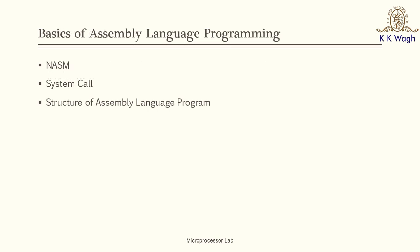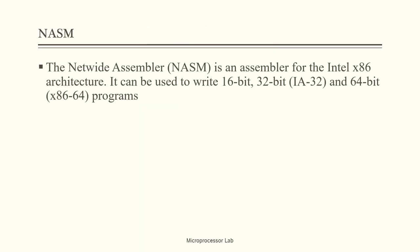Before starting with today's assignment, we will quickly revise the basics of assembly language programming. As we all know, we use the Netwide Assembler to run assembly language programs, and then we use system calls to write our programs. The Netwide Assembler is used for Intel x86 architecture. It can be used to write 16-bit, 32-bit, and 64-bit programs.